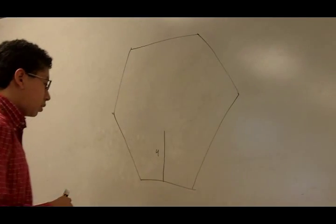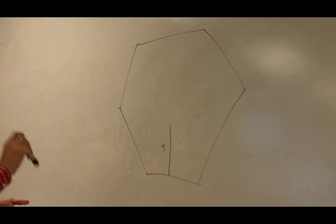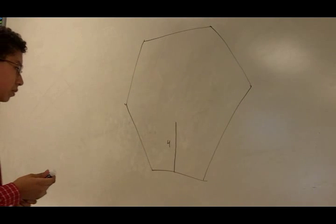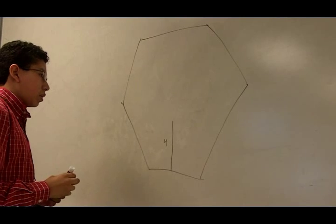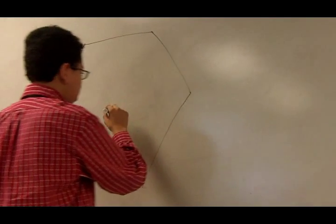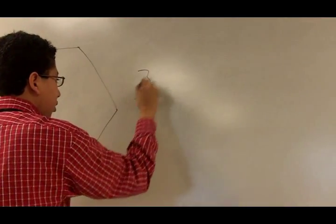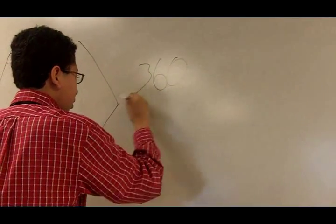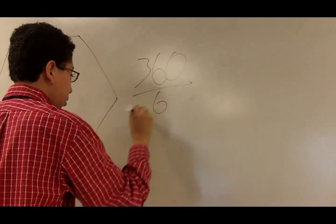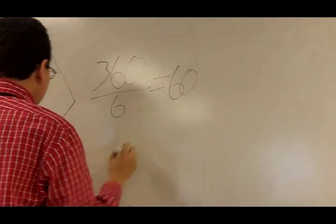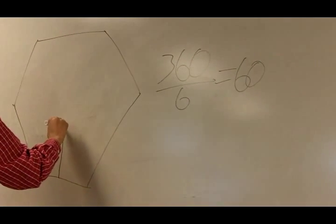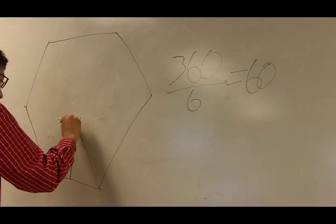Here we have a regular hexagon and I'm going to try to find out the area. First we have to find the central angle which would be 360 divided by 6 which would equal 60 and that would be this angle right here.